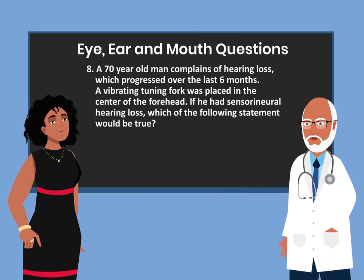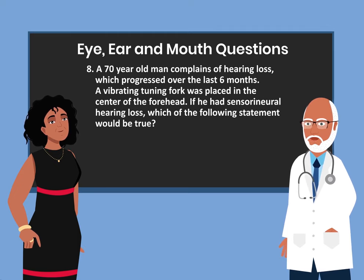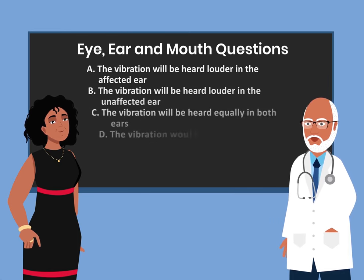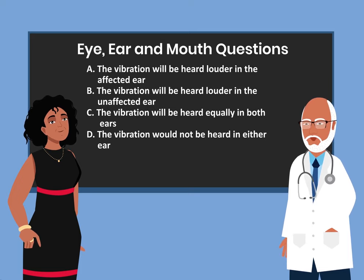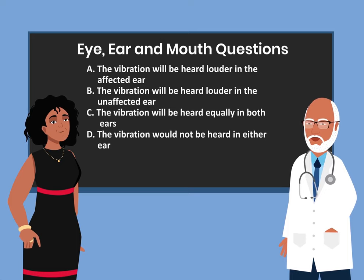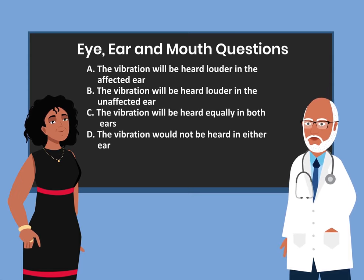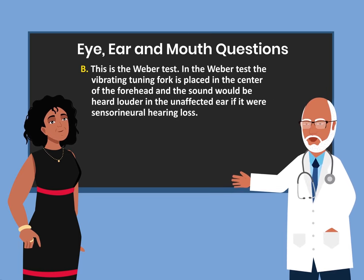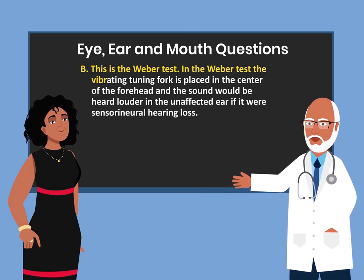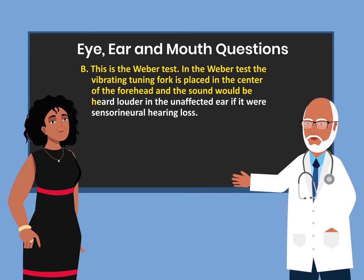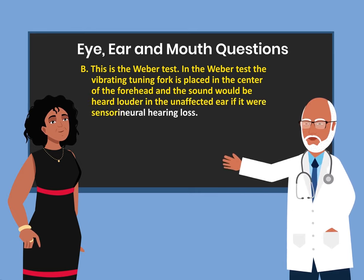Question 8. A 70-year-old man complains of hearing loss which progressed over the last 6 months. A vibrating tuning fork was placed in the center of the forehead. If he had sensorineural hearing loss, which of the following statements would be true? The answer is B. The vibration will be heard louder in the unaffected ear. In the Weber test, the vibrating tuning fork is placed in the center of the forehead and the sound would be heard louder in the unaffected ear if it were sensorineural hearing loss.